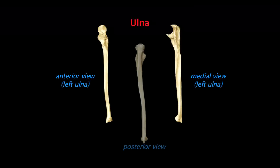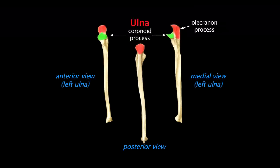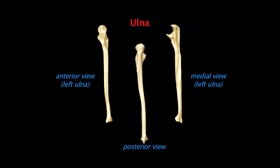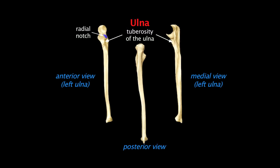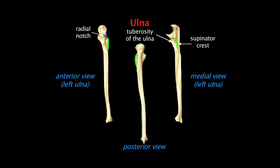The ulna is much larger than the radius and is easily distinguishable by the large olecranon and coronoid processes on its proximal end, which form the large trochlear notch on its anterior surface. Just distal to the coronoid process is a small protrusion called the tuberosity of the ulna, which is the insertion point for the brachialis muscle. On the lateral side of the coronoid process is a smooth depression called the radial notch, which receives part of the head of the radius. Just inferior to this notch is a prominent ridge called the supinator crest, and just anterior to the crest is a smooth depression called the supinator fossa.